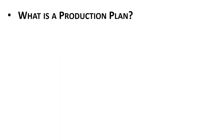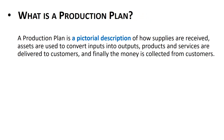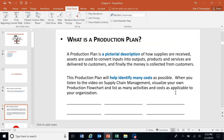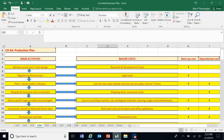The way to overcome this is through a production plan. A production plan is a pictorial description of how supplies are received, how assets are used to convert inputs into outputs, how products and services are delivered to customers, and finally how money is collected from customers.